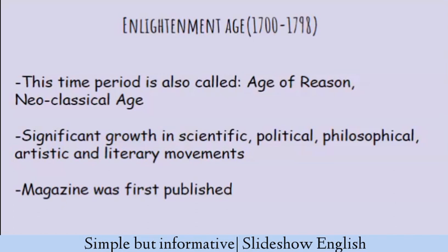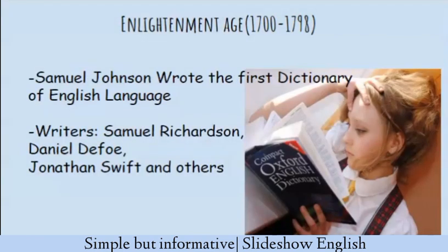From 1700 onward, during the whole 18th century, there was a renovation of English society, culture, art, literature, economy, and education. This is also called the Age of Reason, the Neoclassical Age, and the Enlightenment Age. This time was about scientific, political, and philosophical discourse. Many scientific inventions were made — Sir Isaac Newton, Francis Bacon, and Copernicus came to the headlines. The publication of magazines and the first dictionary of the English language were definitely remarkable incidents. Alexander Pope, Jonathan Swift, Daniel Defoe, and Samuel Richardson became extremely popular as writers.